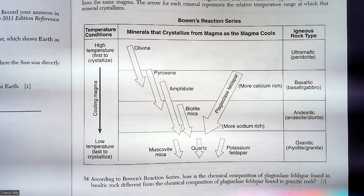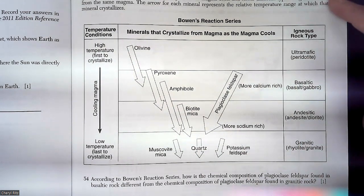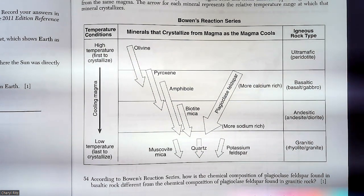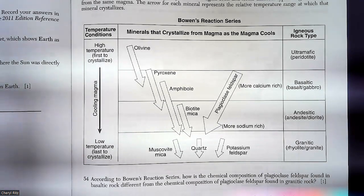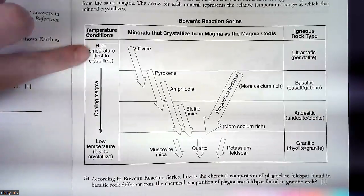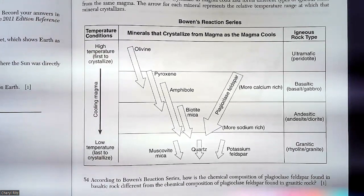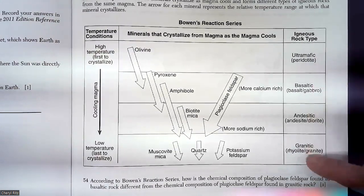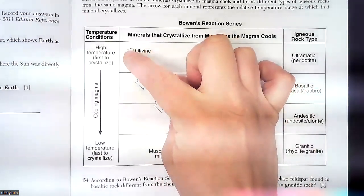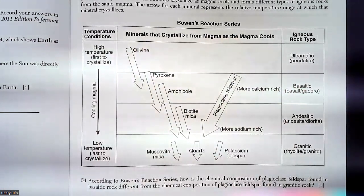Base your answers to 54 through 56 on the diagram of Bowen's reaction series below, which shows a sequence of which minerals crystallize as magma cools and forms different types of igneous rocks from the same magma. The arrow shows each mineral represents the relative temperature range at which that mineral crystallizes. So they're saying this is the same magma that's going to crystallize — here it's at high temperatures, here it's at low temperatures, so the last to crystallize. Still kind of above your heads, but we're going to take it bit by bit and see how it works.